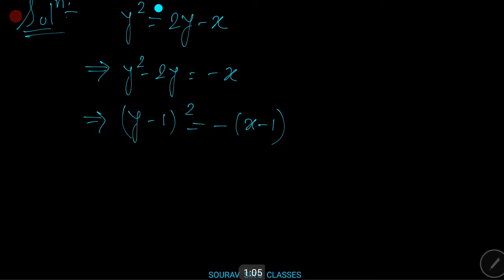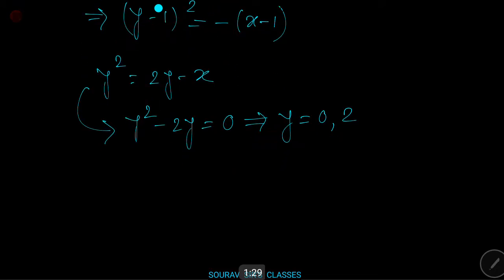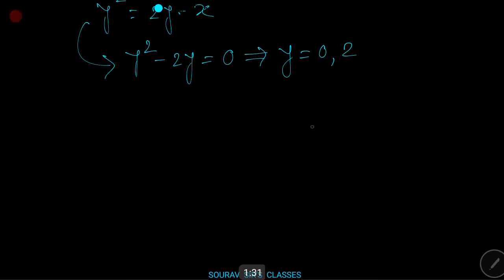Putting x = 0 in y² = 2y - x, we get y² - 2y = 0, which implies y = 0 or y = 2. So the curve meets the y-axis at (0, 0) and (0, 2). A rough sketch of the curve is shown on your screen.